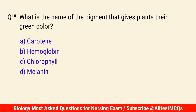Q10. What is the name of the pigment that gives plants their green color? The correct answer is C: Chlorophyll.